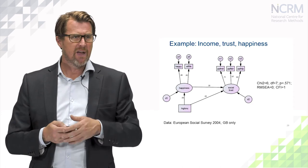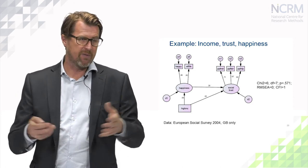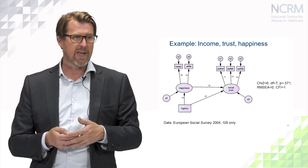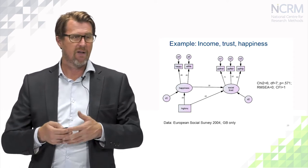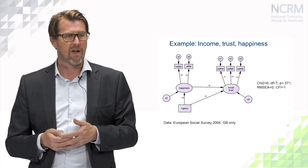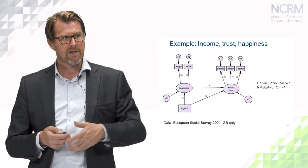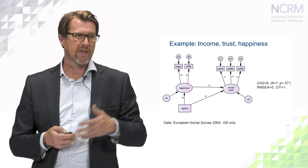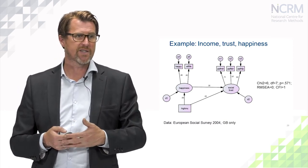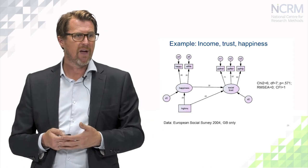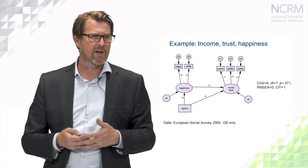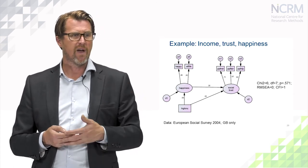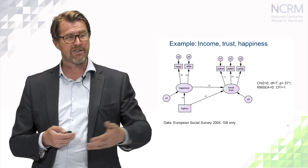And you can see here that the beta weights on the path diagram there indicate that there are, these are standardised parameter estimates. So you can see that there is an effect of being high income on social trust, and there seems to be an indirect path there. So we could just take the product of the 0.09 and the 0.35 parameters to get the indirect effect.